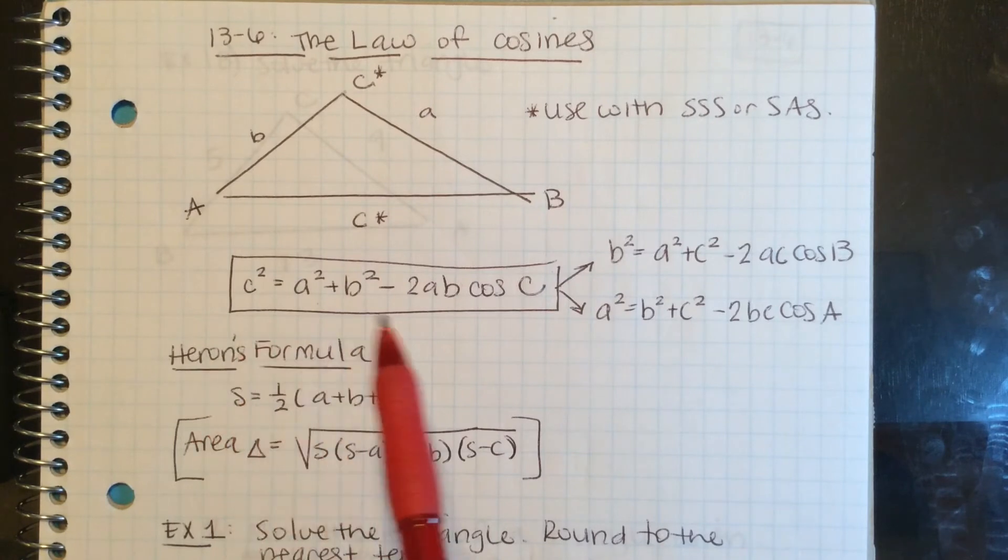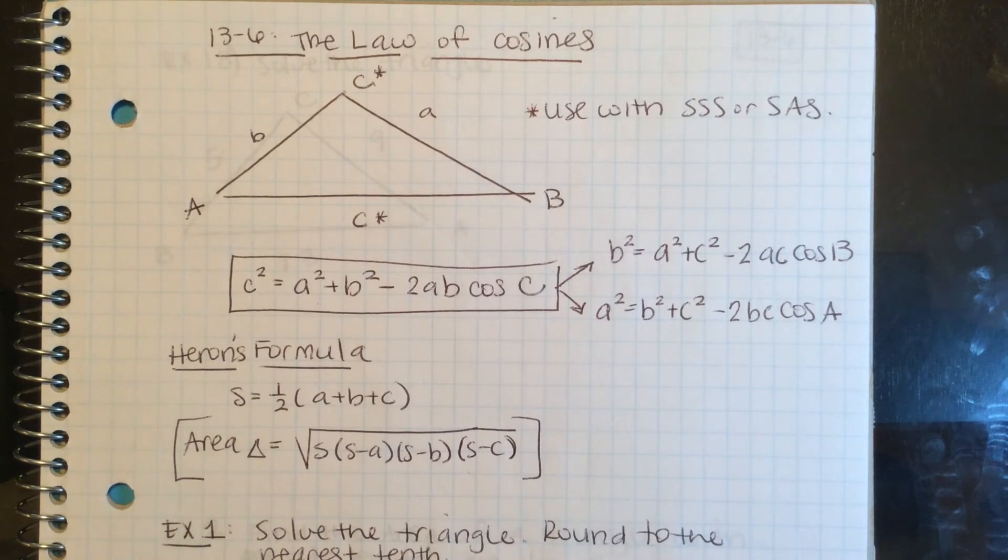We can also connect law of cosines to another formula for the area of a triangle, Heron's formula.